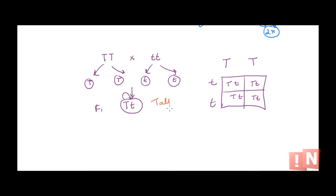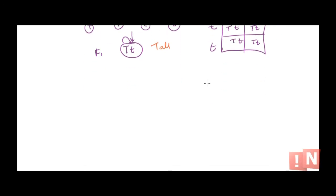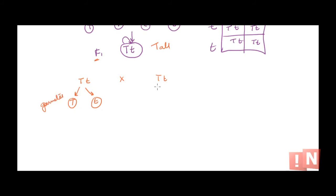In the next step, there was self-pollination — a cross between two plants of the F1 generation. The F1 plant is capital T small t (heterozygous). What types of gametes can this plant produce? It can produce capital T and small t, because these alleles get separated when gametes are formed. Both F1 parents can each produce capital T and small t gametes, and any gamete from one parent can combine with any gamete from the other.